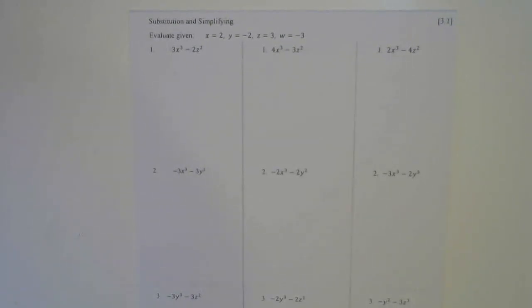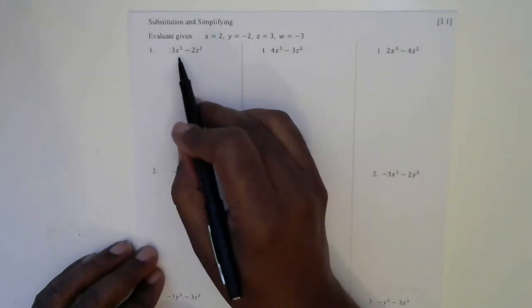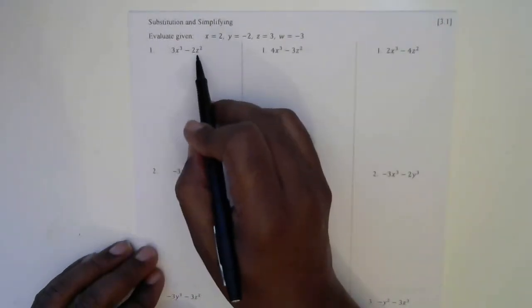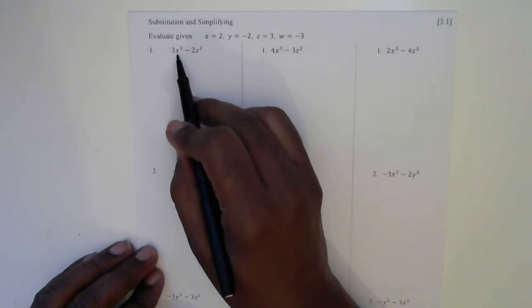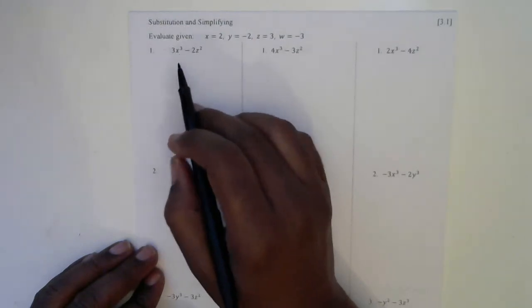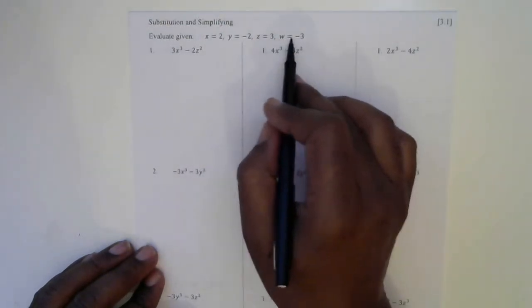This is video three. We'll be doing substitution and simplifying. So we have a 3x and a 2z squared, which is x cubed, and this tells us what values to put in.